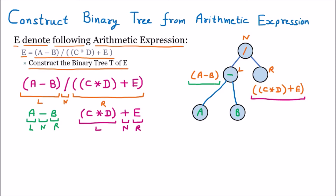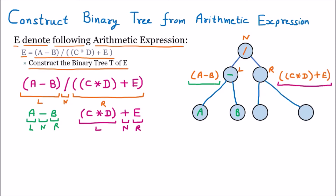We now add two child nodes: the parent is plus, the right child is E which is placed inside a circle since it needs no further extension, and the left child is still the expression C into D which needs to be solved further.